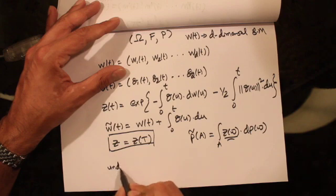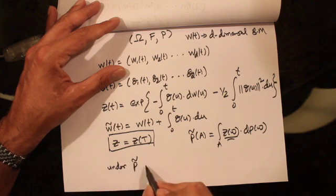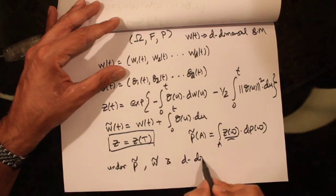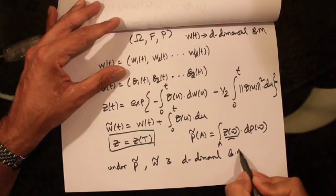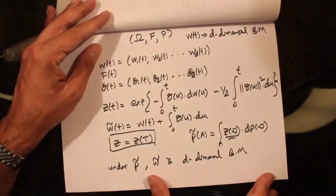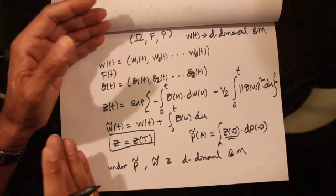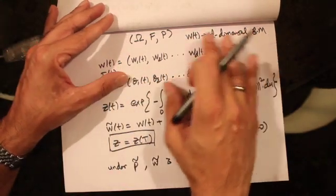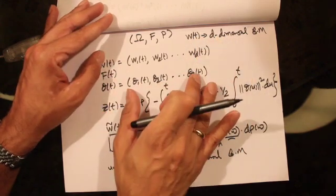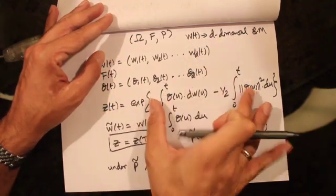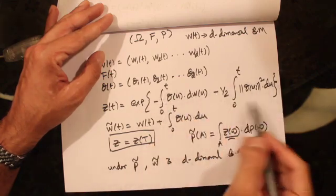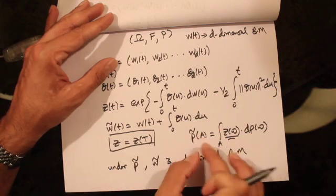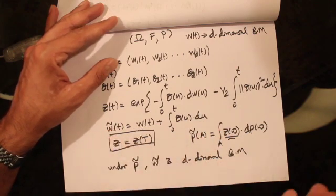When we assign probabilities using this formula, P-tilde is a probability measure, and under this probability measure, the process W-tilde(t) will be a d-dimensional Brownian motion. So under P-tilde, W-tilde is a d-dimensional Brownian motion.